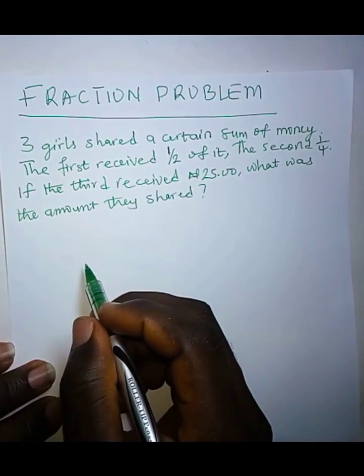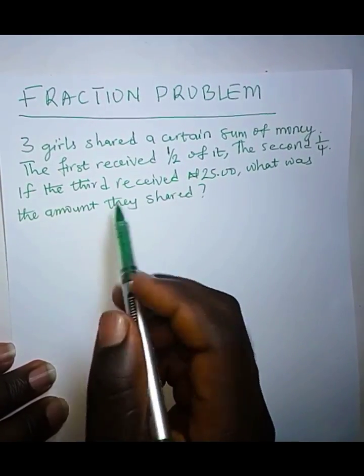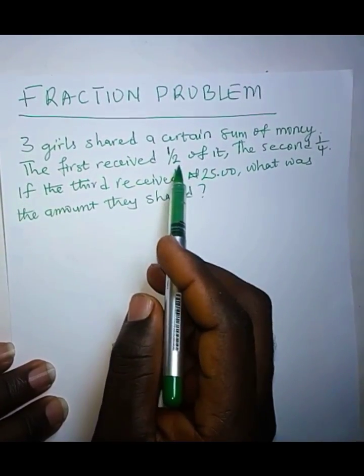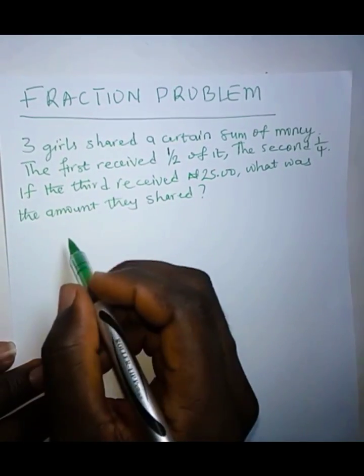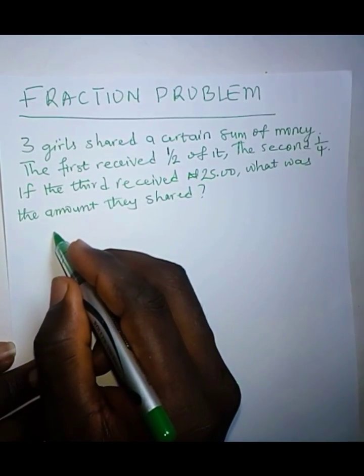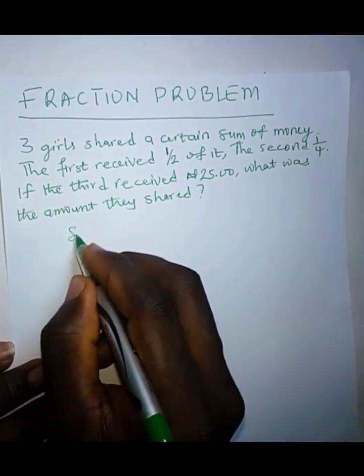The first thing is to add the two fractions received by the first two persons. So we add them. Solution.